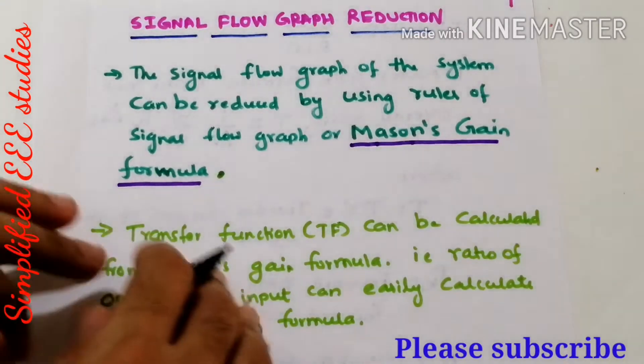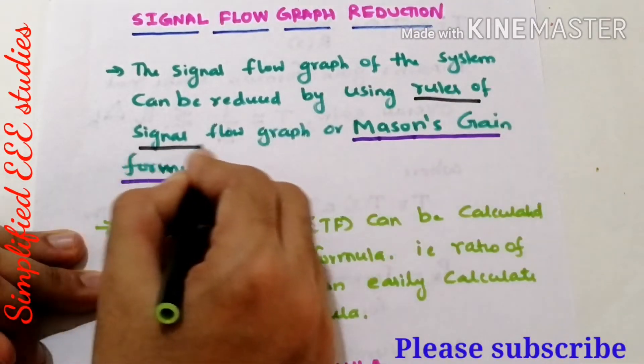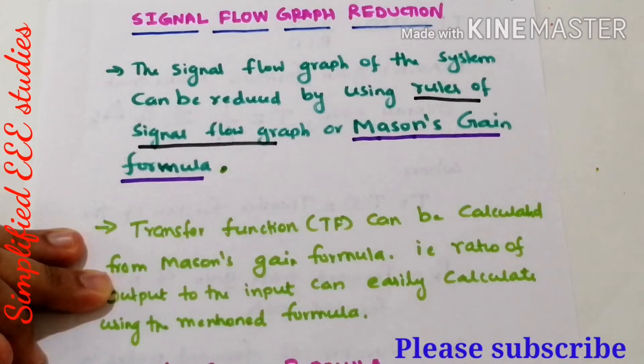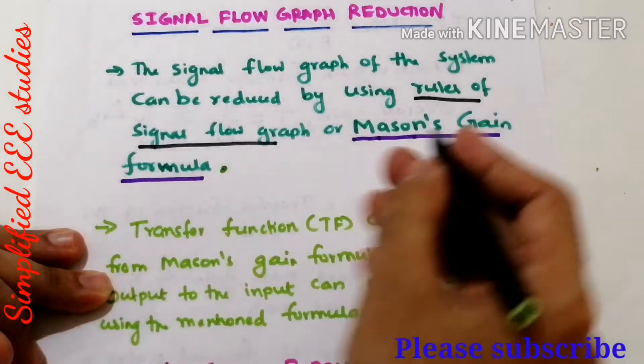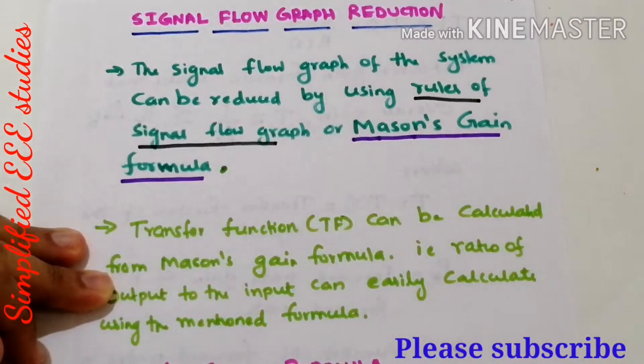By using the rules of signal flow graph it is possible to reduce the signal flow graph, or else you can go for Mason's gain formula. There are two methods available.